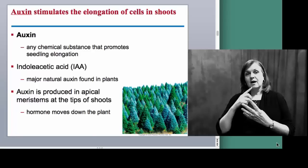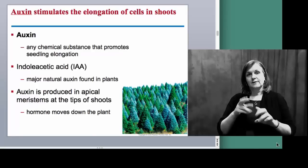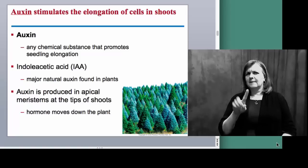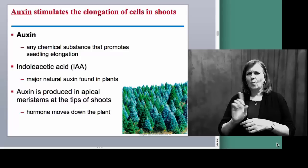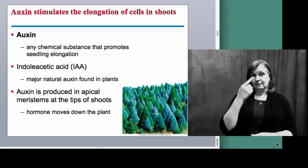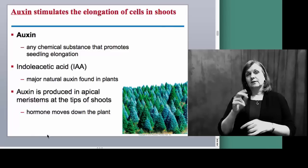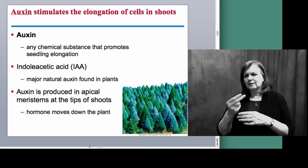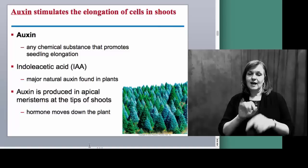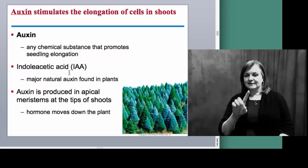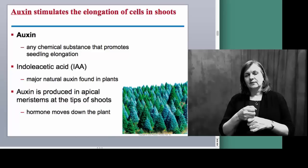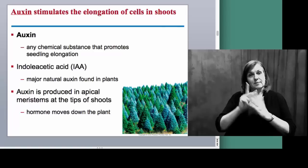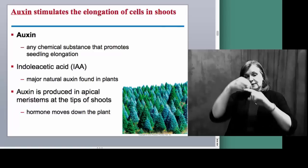Auxins are a chemical group that is released from the apical meristem or apical buds of a plant. We've talked about apical buds before when we talked about primary plant growth. The auxin hormone moves down the plant — so it must be located at the top. IAA, or indoleacetic acid, or auxin, promotes elongation of the primary growth in the plant. It's located at the top of the plant in the apical bud and causes the plant to get taller.